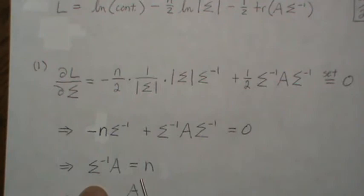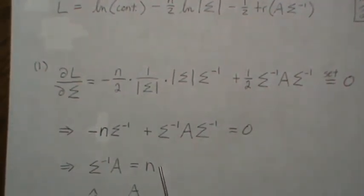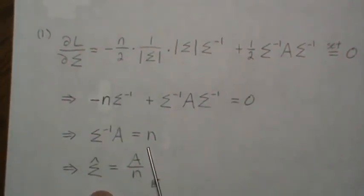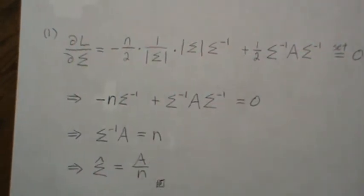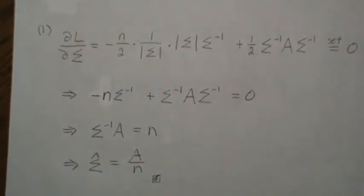So we multiply, we left multiply everything by sigma, and it cancels here, and we're left with n times sigma, divide by sigma, or divide by n, I mean, and we get this. So the maximum likelihood estimator of sigma is A divided by n. And that's the answer.